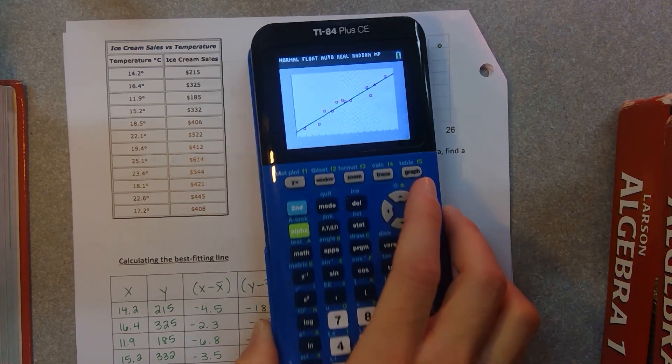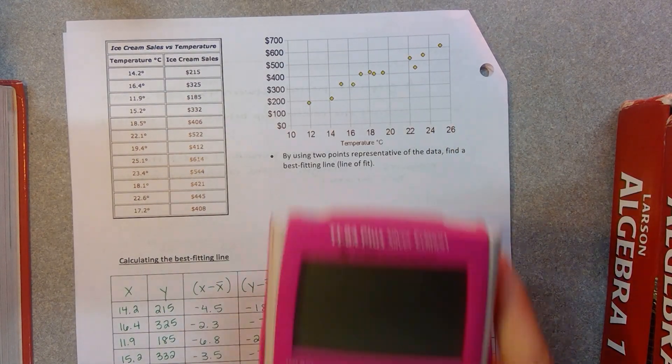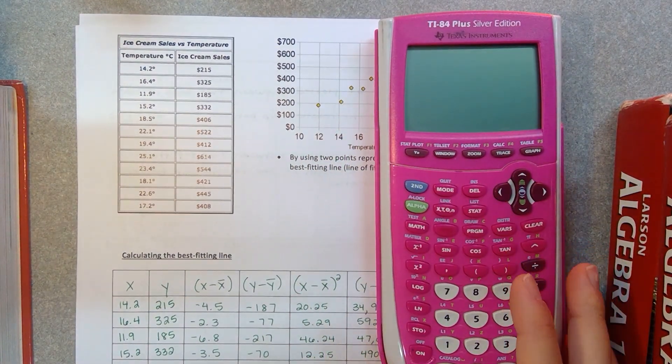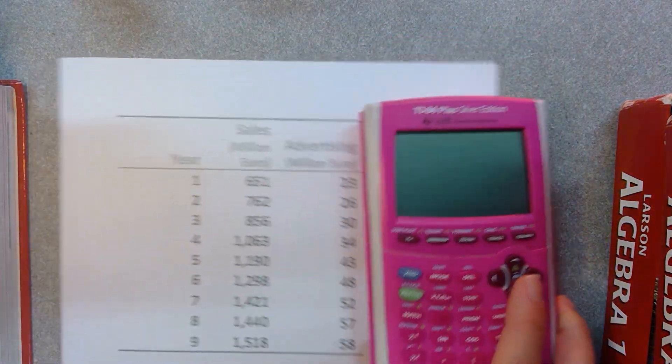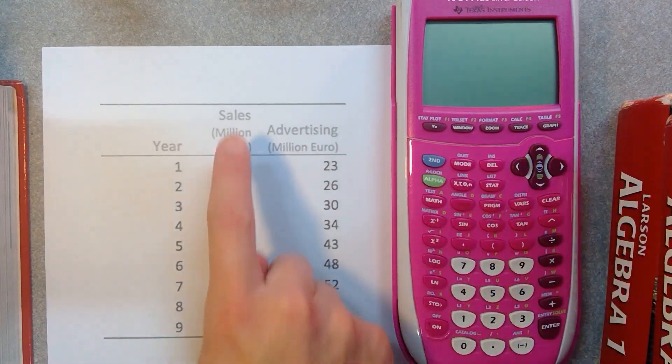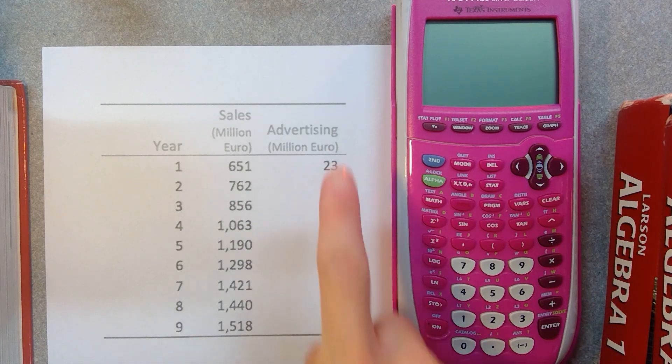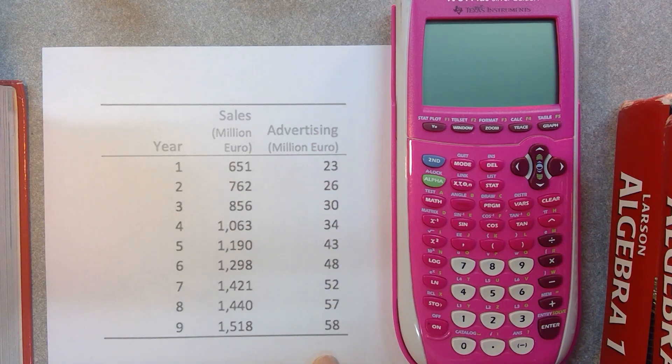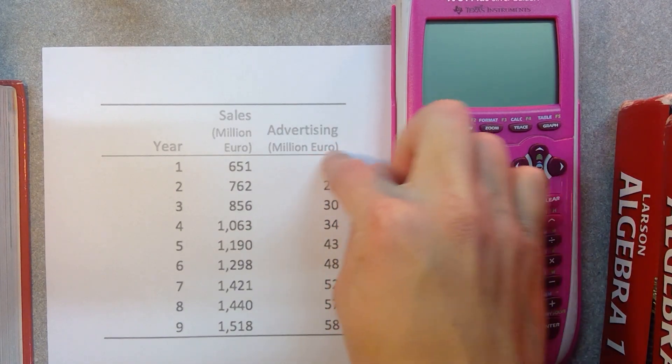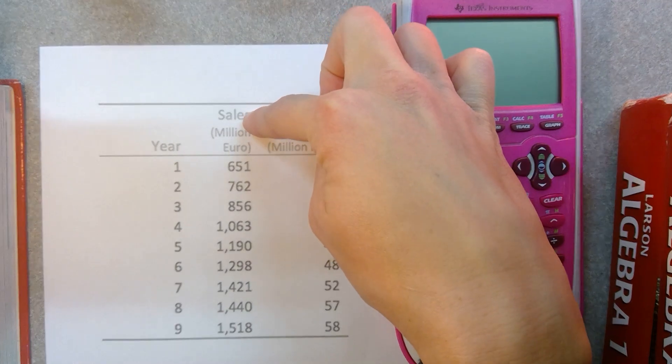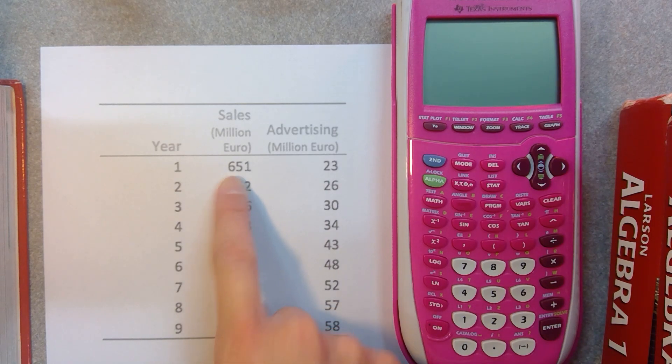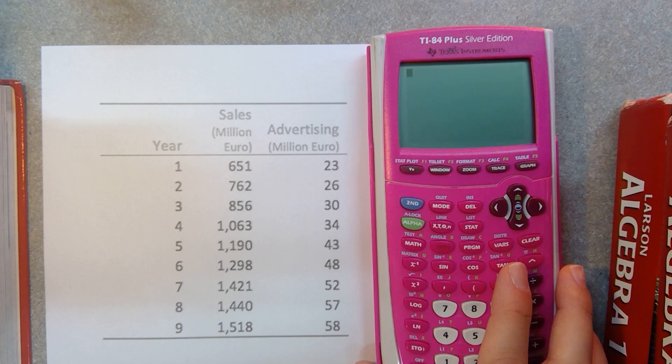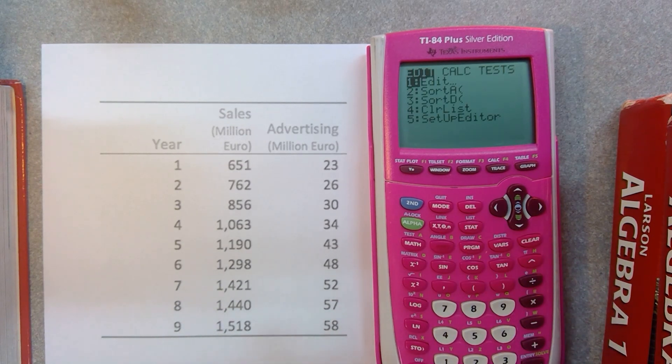I now want to show you something else on an older calculator, if you don't have one of the fancier or colorful ones. This does the exact same thing, and so I'm going to use a different example here as well. So this is sales of an Italian clothing company, and then this is their advertising budget. So this is how much they spend in advertising in millions in euros, right? It's an Italian clothing company. And then this is how much they sell in millions of euros. They spend 23 million euros in advertising, they make 651 million euros. So again, here's another example. This is what I expect you to be able to do. Hit your stat button, go over to calc, or just kidding, edit.